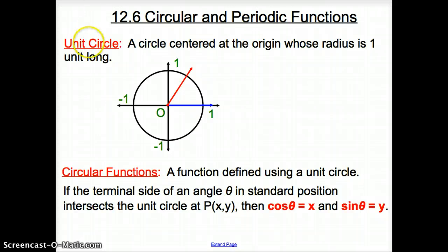Let's get things kicked off with the unit circle, shown here, a circle centered at the origin whose radius is one unit long. So our radius from here to there is one unit long, and that goes all the way around the circle. The radius is one unit long here, here, there, all the way around.